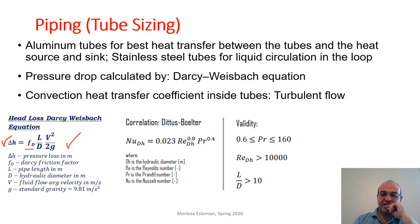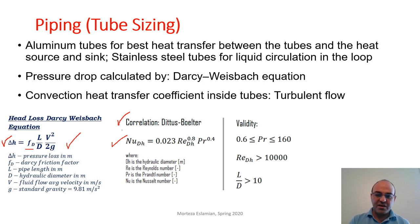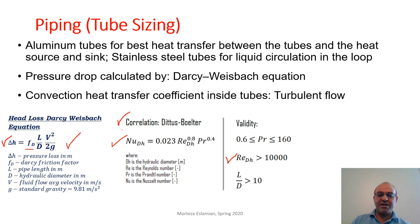This head loss due to major losses, plus the minor losses, equals the total head that must be compensated by the pump. For the turbulent region, which is recommended because the friction factor is minimized and heat transfer increases with Reynolds number, the Dittus-Boelter correlation gives the Nusselt number as a function of Reynolds number and Prandtl number, with a specified range of validity.